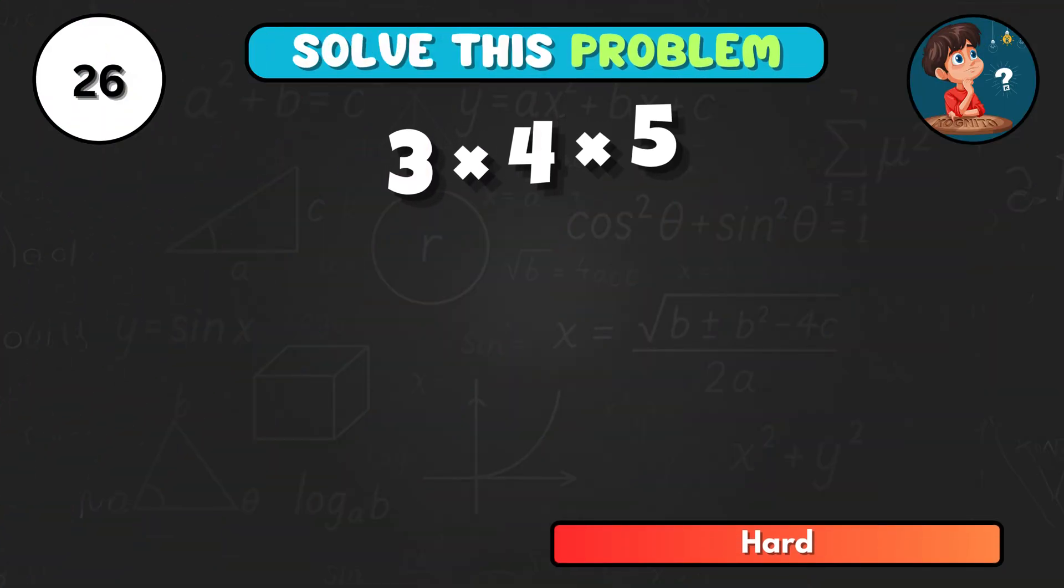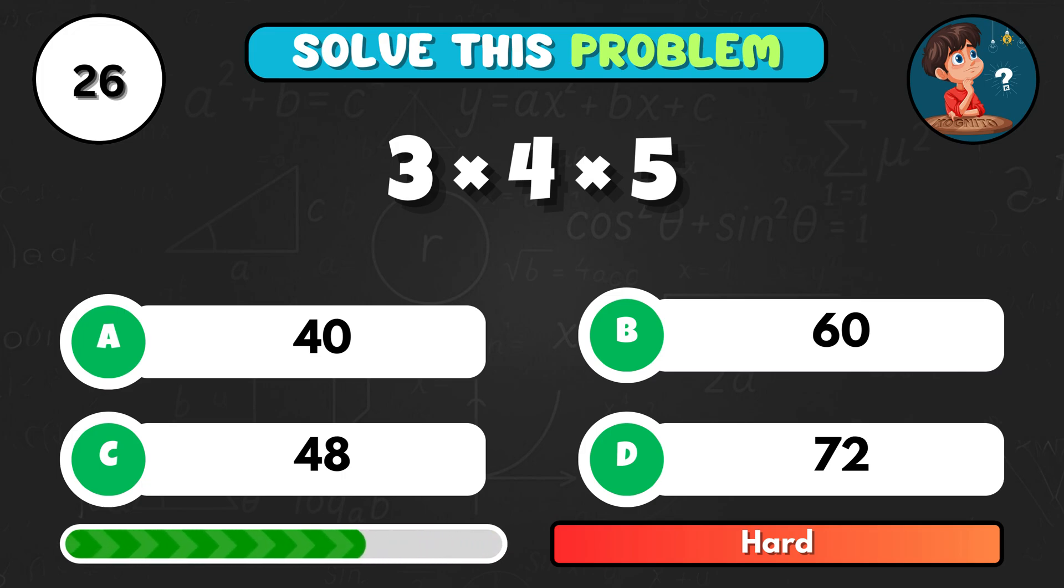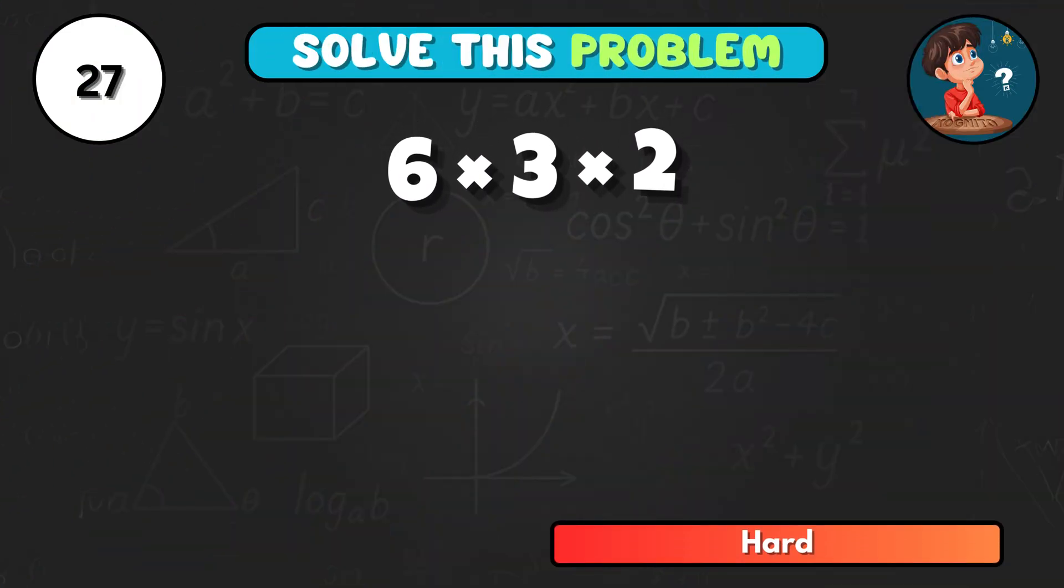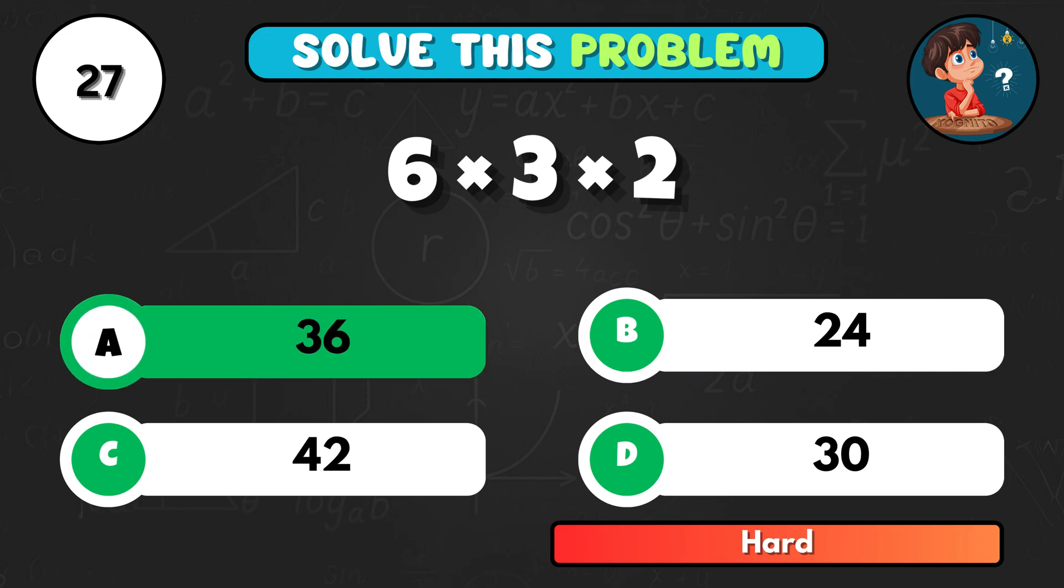Big one now. 3 times 4 times 5. Do you know it? That's B, 60. How about 6 times 3 times 2? Quick math. It makes A, 36.